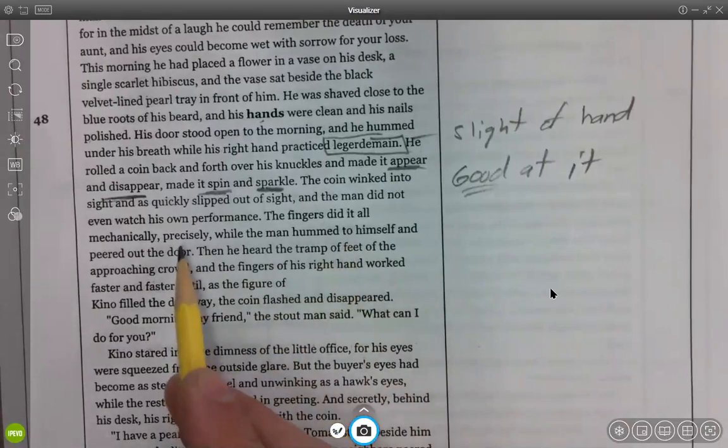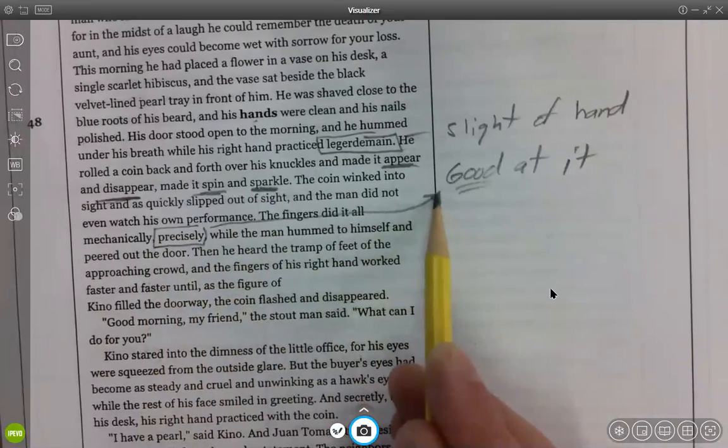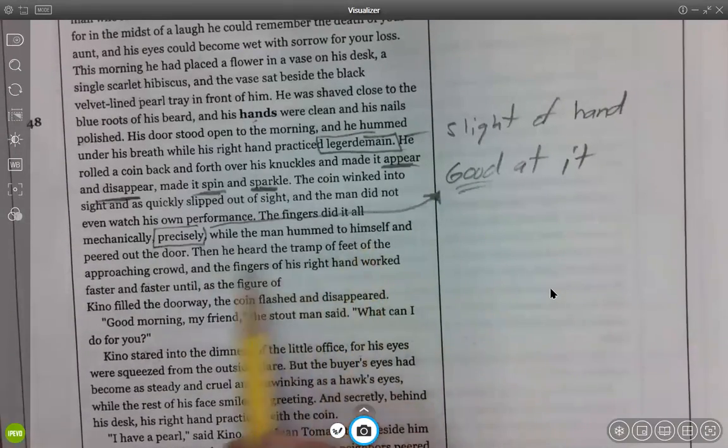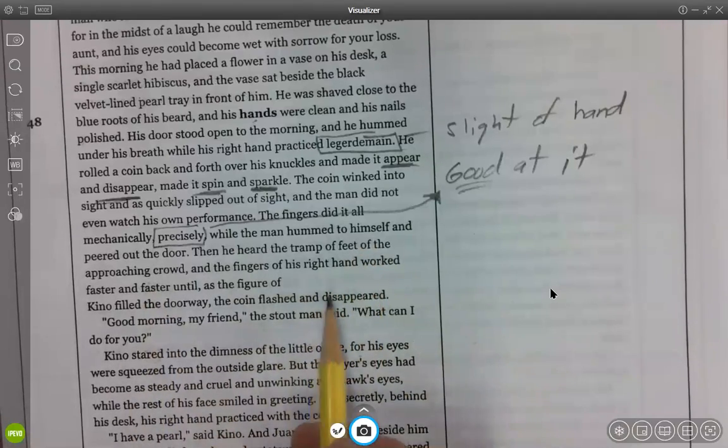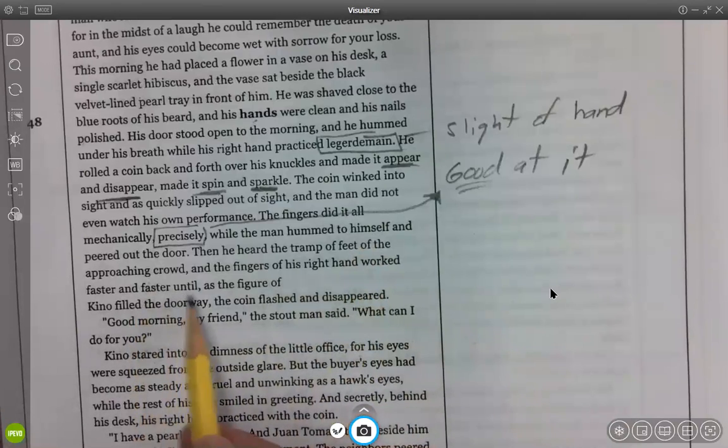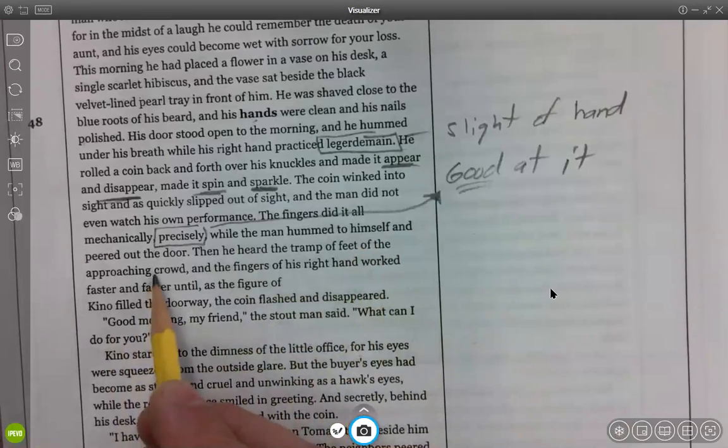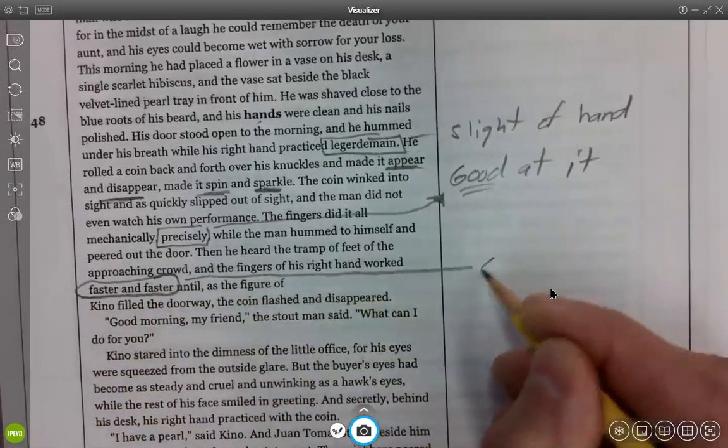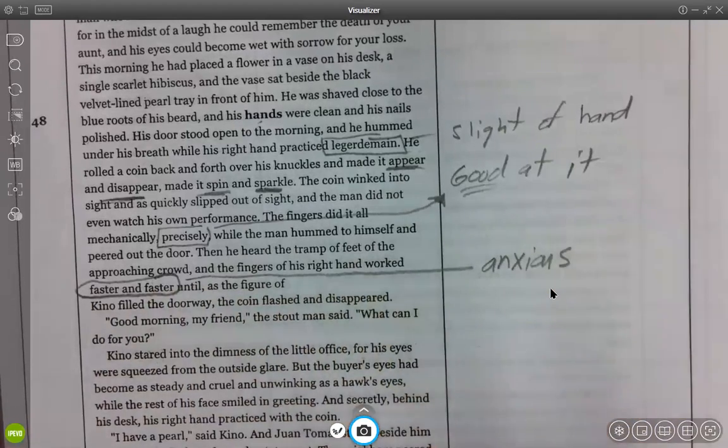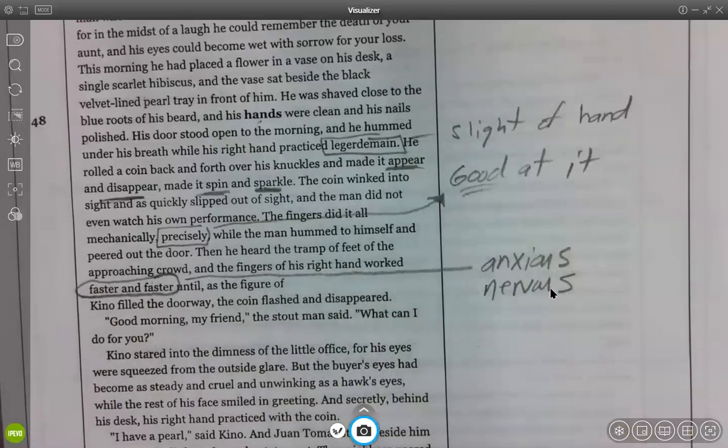The fingers did it all mechanically, precisely. This idea of precision, you know, he's very good with this coin trick. While the man hummed to himself and peered out the door, then he heard the tramp of feet of the approaching crowd, and the fingers of his right hand worked faster and faster as the figure of Kino filled the doorway. The coin flashed and disappeared. You know, as the crowd approaches, he starts working faster and faster with the coin. I mean, I don't know if it means, like, he's anxious about this deal that might go down with Kino. It's like how some people kind of, like, bite their fingers. Yeah. Some sort of nervous tick, right?